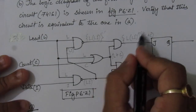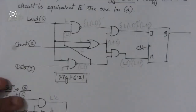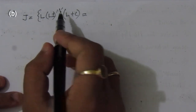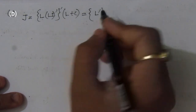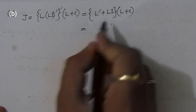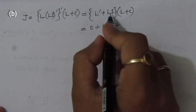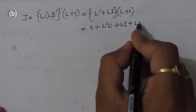Simplifying Z: (L·(LI0)')' = L' + LI0 by De Morgan's theorem (since (AB)' = A'+B'). Multiplying (L' + LI0)·(L+C): L'·L = 0, so we get L'C + LI0·L + LI0·C = L'C + LI0 + LI0C. In sum-of-minterms form with variables L, I, C, this gives minterms 1, 3, 6, 7.